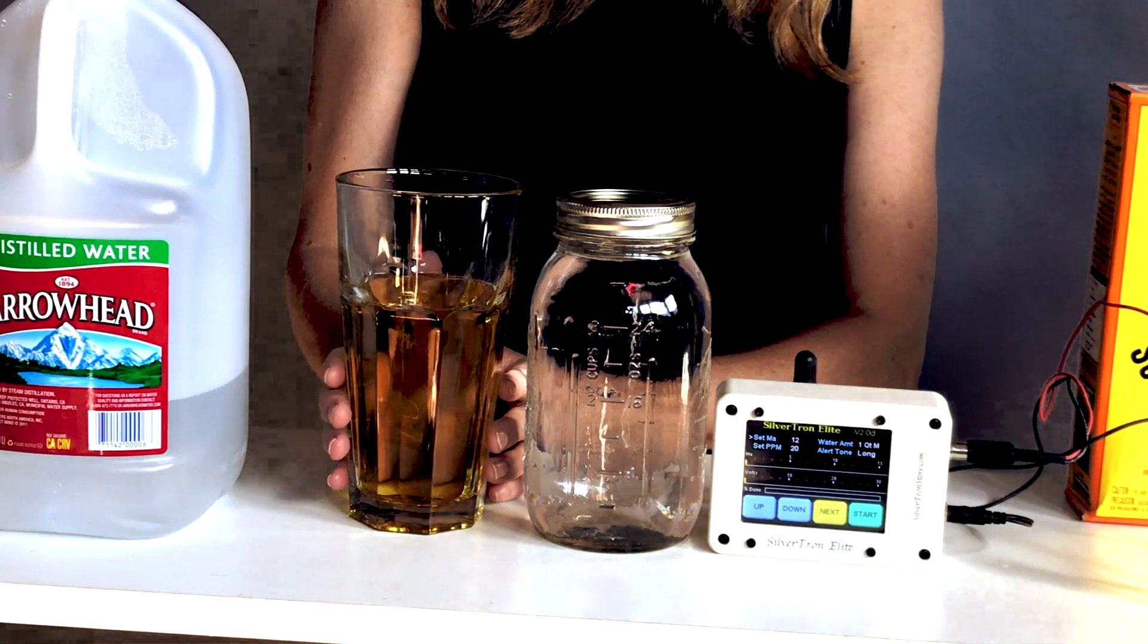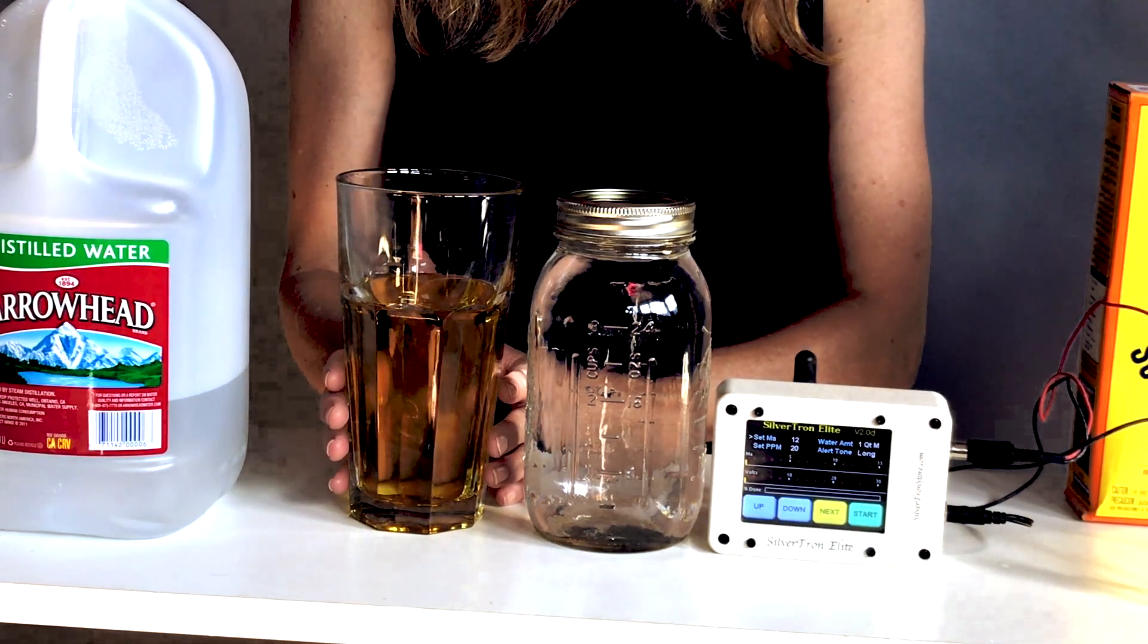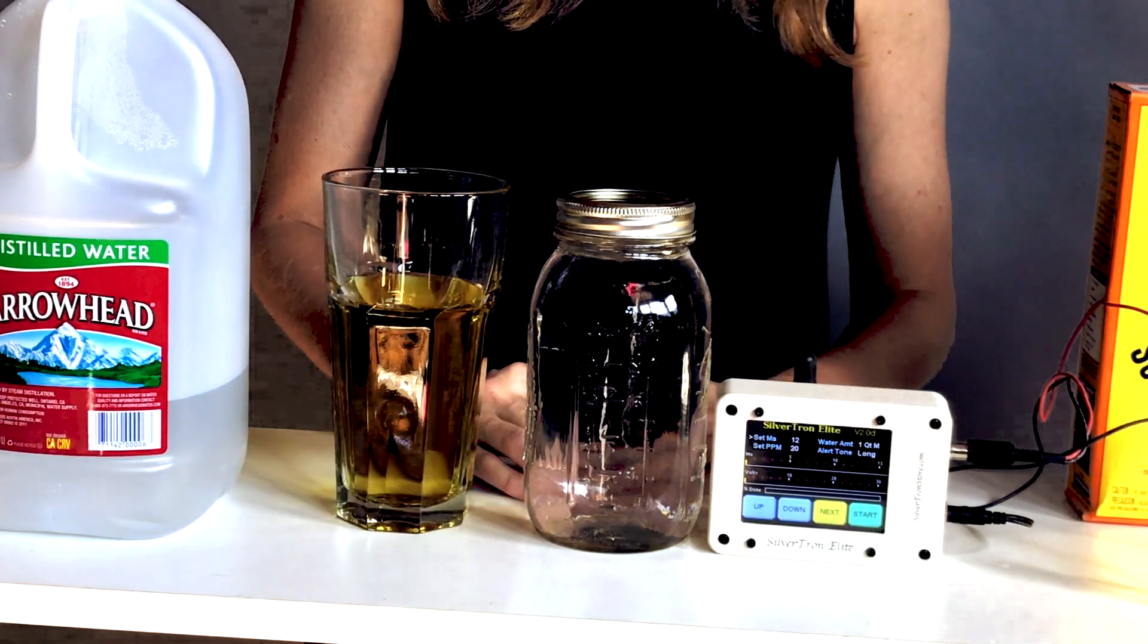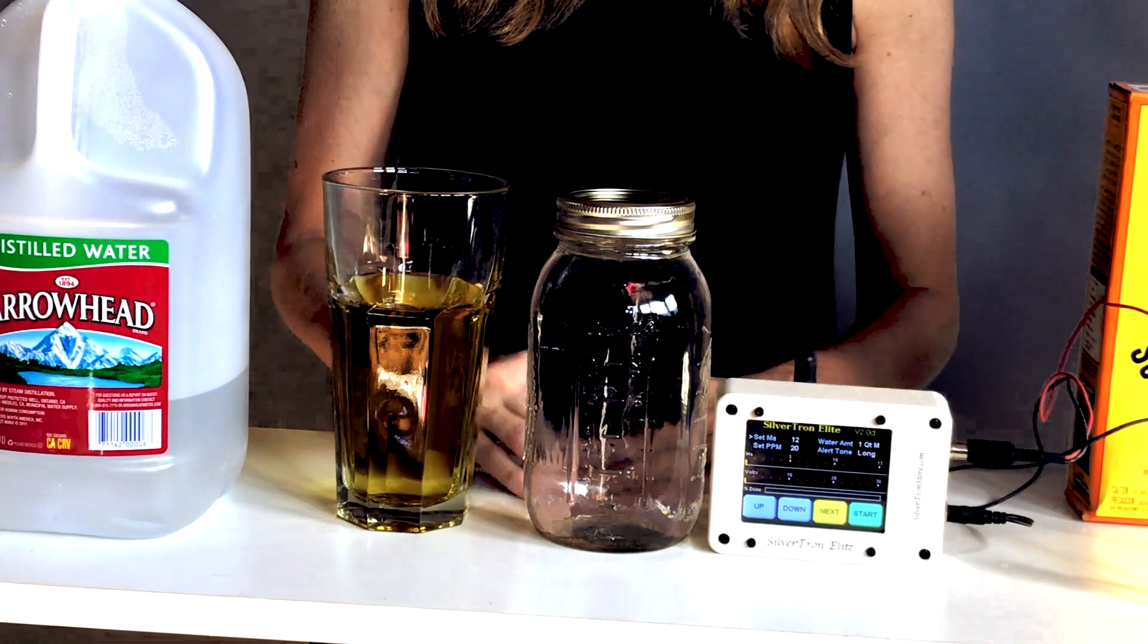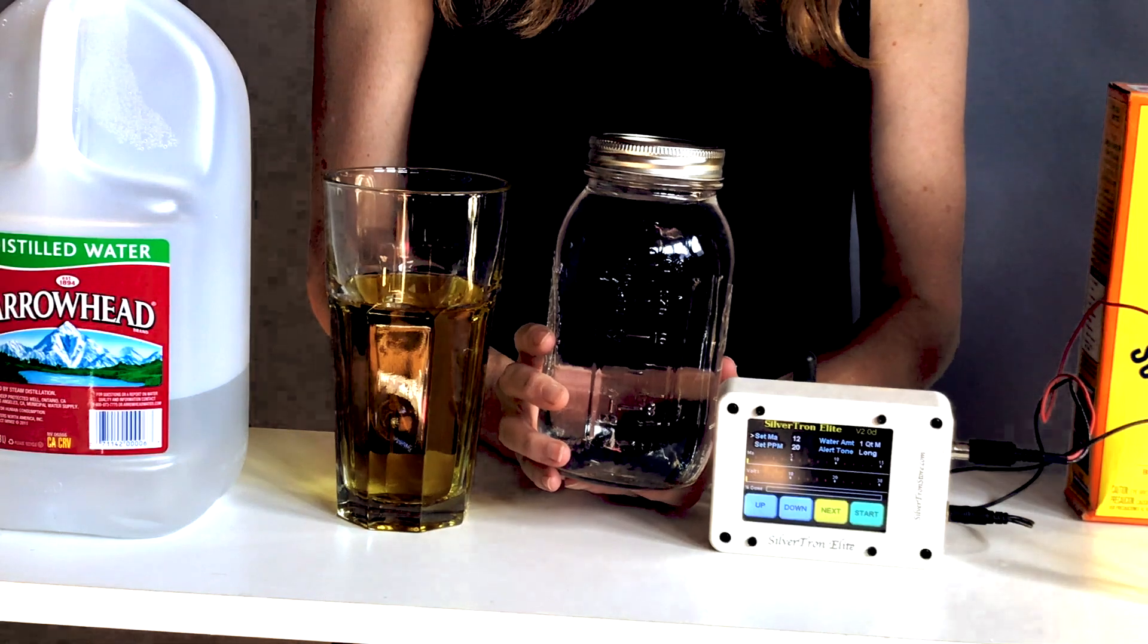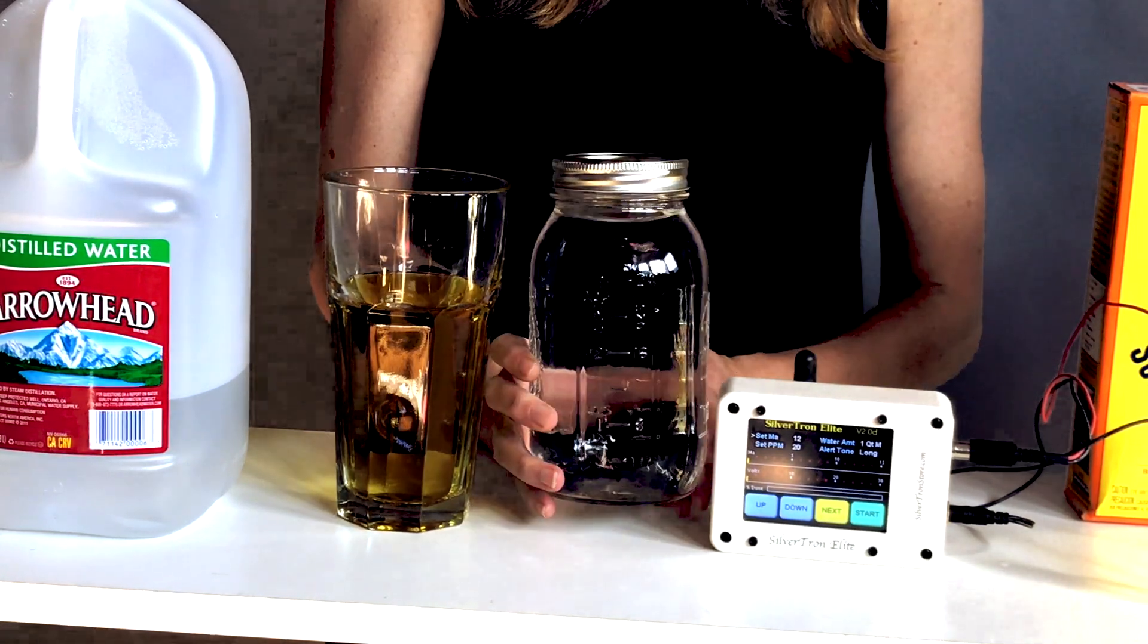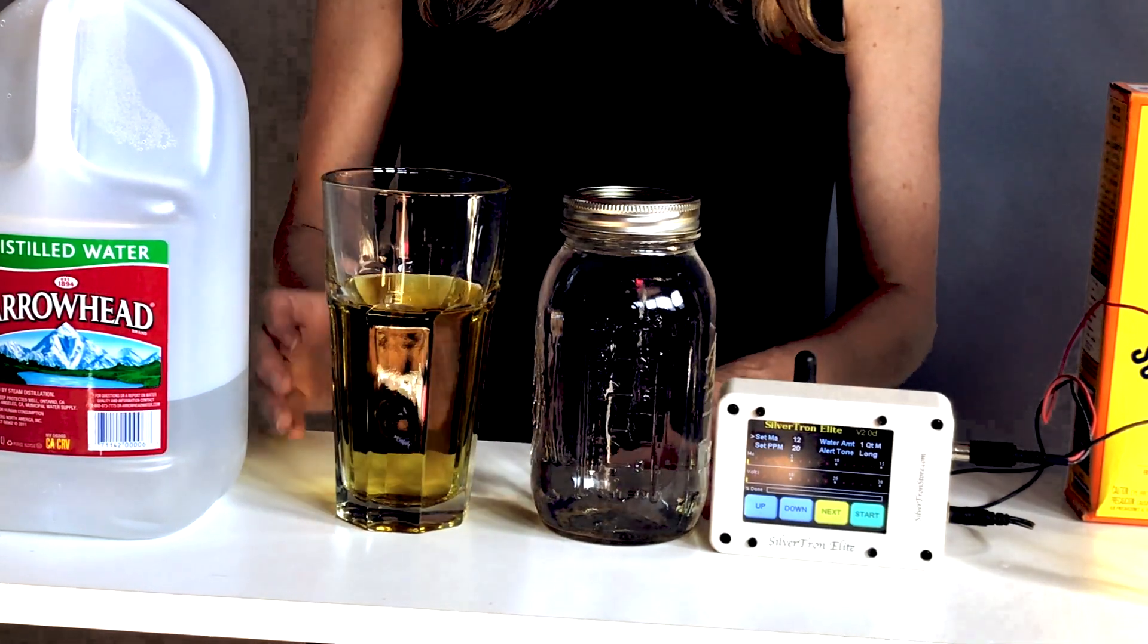So if you taste this after you've prepared it and it tastes strange and has a metallic taste, something went wrong with your batch. One of the common mistakes people make at home is either forgetting the electrolyte solution or using a contaminated mason jar, so you need to make sure your mason jar is sterilized before you add your distilled water. Another factor could be that this distilled water that you're using is not as pure as you thought it would be.